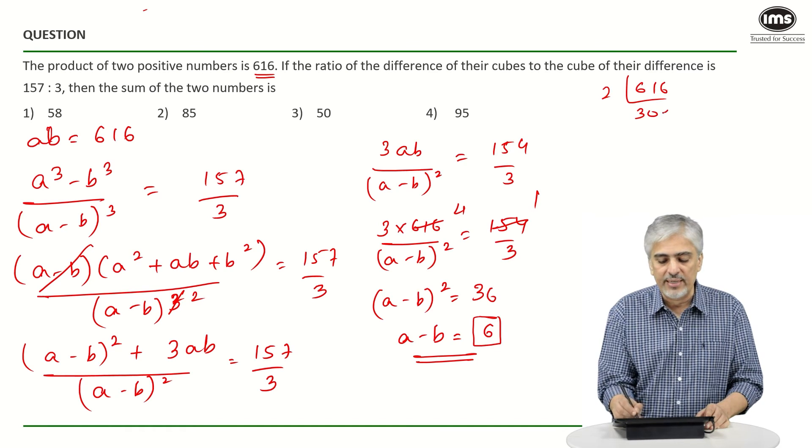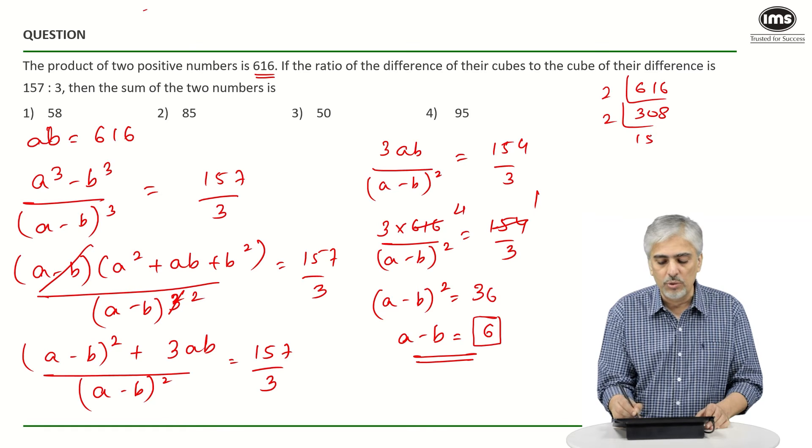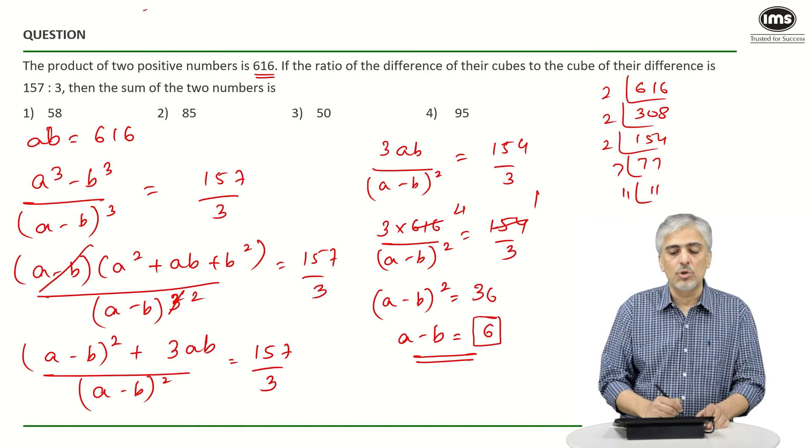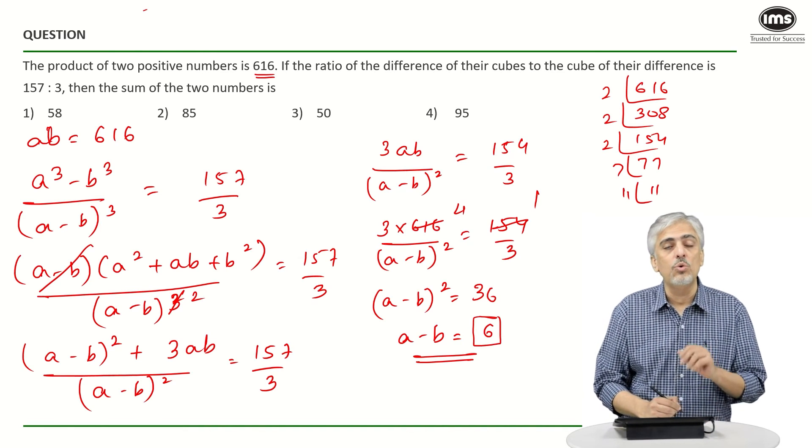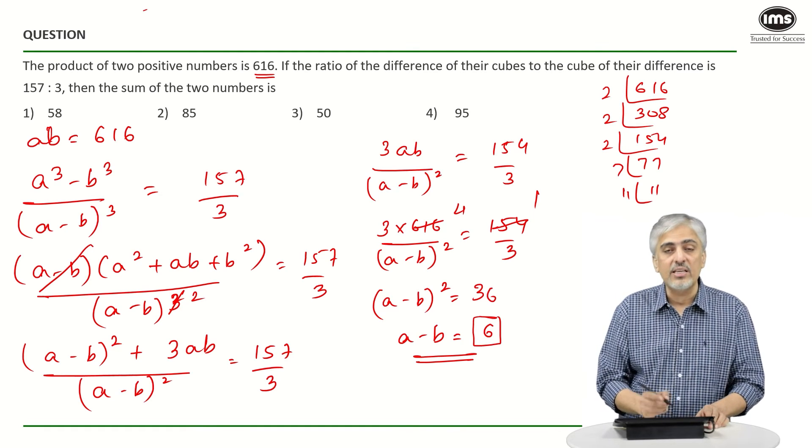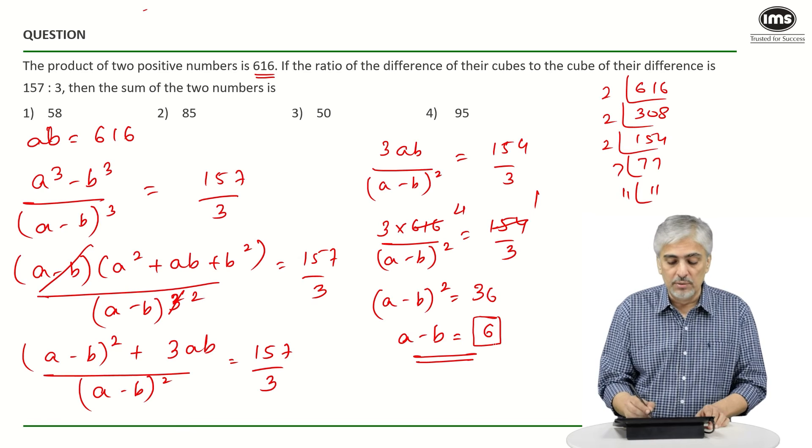Take factors of 616 you will start getting it. 2 into 308, 2 into 154, 2 into 77 and 7 into 11. So I need two numbers whose difference is 6 and their product is 616.